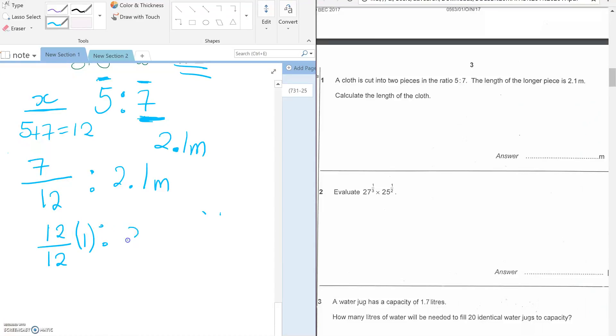But we want to find what 12 over 12, or the total length of the cloth, is. So we do it like this: we say 7 over 12 is to 2.1, but then 12 over 12 is to X, and then we cross multiply.